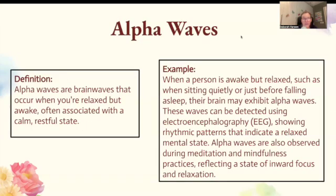First up, we have alpha waves. Alpha waves are brain waves that occur when you're relaxed but awake, often associated with a calm, restful state. When a person is awake but relaxed — such as when sitting quietly or just before falling asleep — the brain may exhibit alpha waves. These can be detected using an EEG, showing rhythmic patterns indicating a relaxed mental state. Alpha waves are also observed during meditation and mindfulness practices, reflecting inward focus and relaxation.